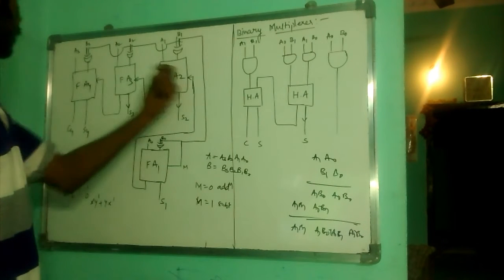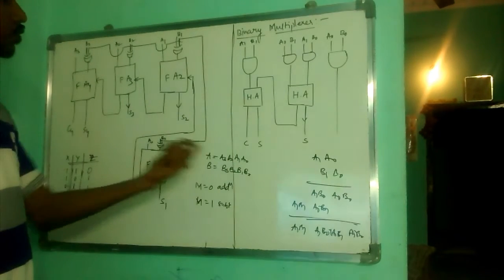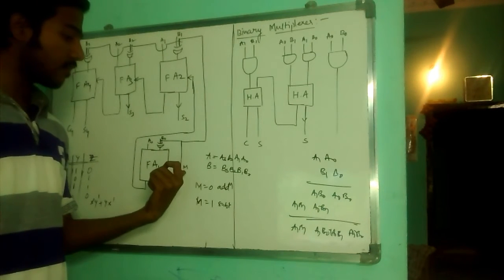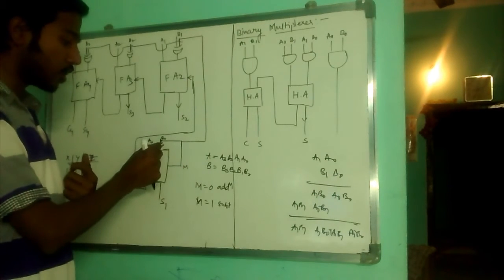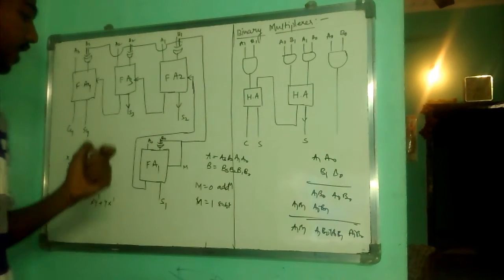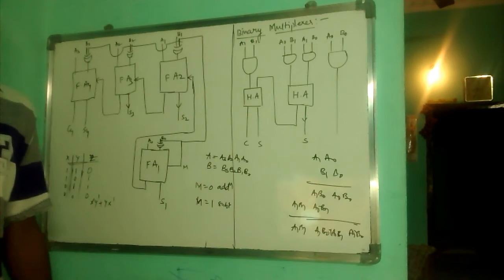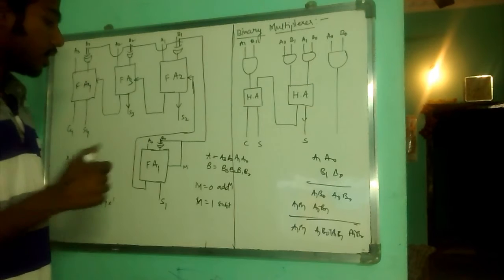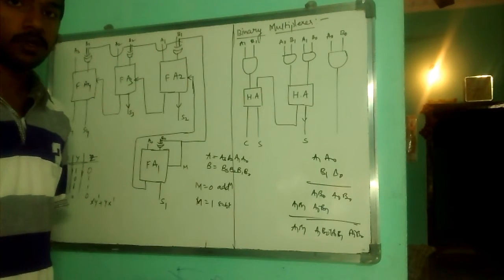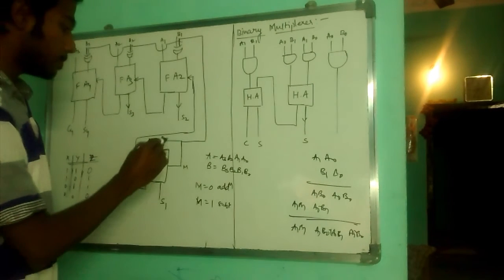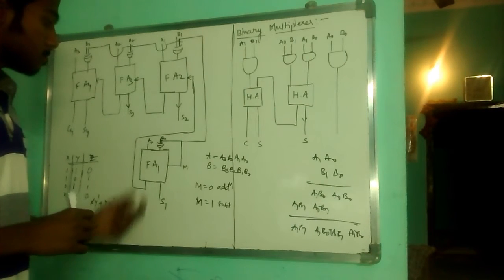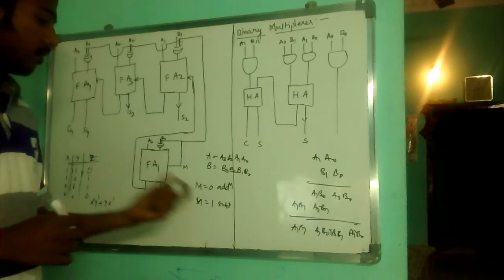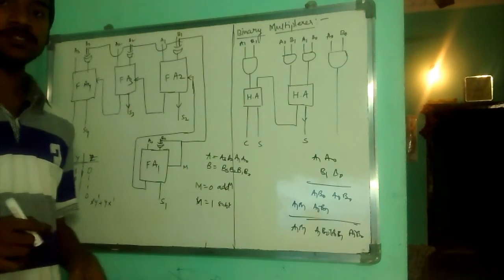I have given A0, A1, A2, A3 bits to each full adder, and along with B0, I have given one selection line M to the XOR gate. Output of the XOR gate is given as input to the full adder. As we already know, full adder takes two inputs and gives the output. Whenever M equals 0, it performs addition. Whenever M equals 1, it performs subtraction. We will see how.